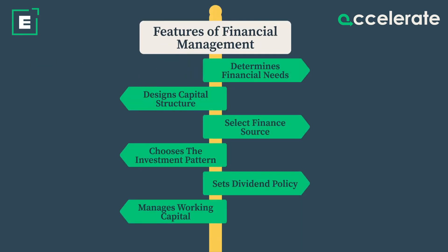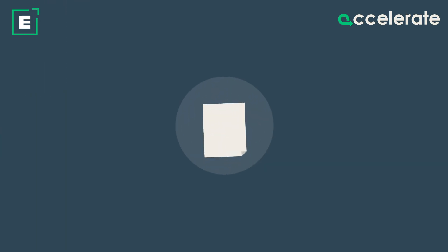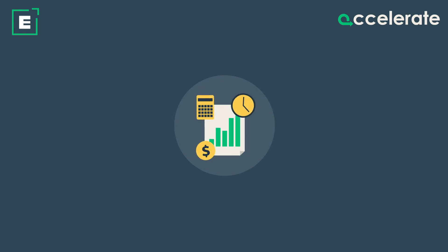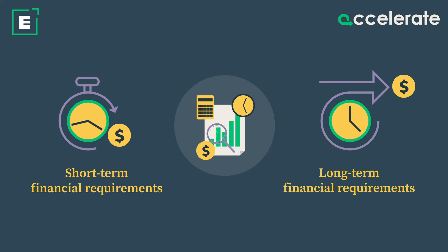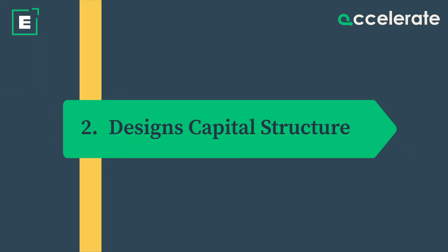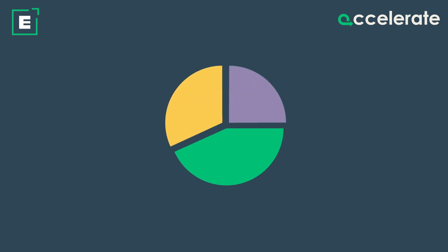Features of financial management. 1. Determines financial needs: With the help of financial management, a company can accurately estimate its short-term and long-term financial requirements. 2. Designs capital structure: Financial management helps corporations find the optimum proportion of equity and debt in their capital.